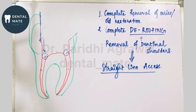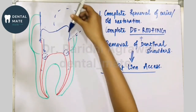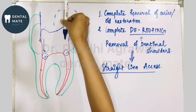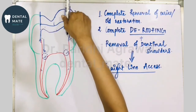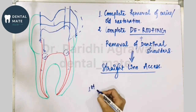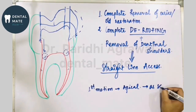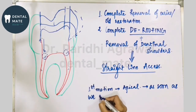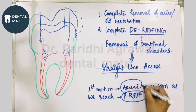This is for the straight-line access. Always remember: when approaching the pulp chamber, the first motion of the bur is apical. As soon as we reach the roof of the pulp chamber, our motion should change from apical to lateral.